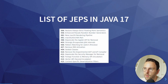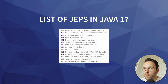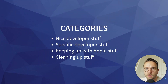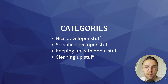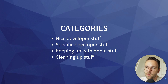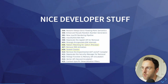Here we have a list of the JEPs, or JDK Enhancement Proposals, in Java 17. To simplify this a little bit, I have divided all the JEPs in this version into four categories: some nice developer stuff, some specific developer stuff, some keeping up with Apple stuff, and the last category is cleaning up stuff — also important.